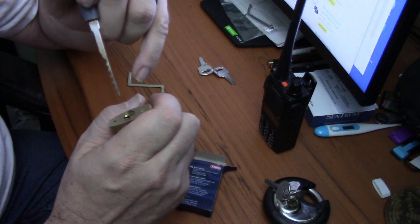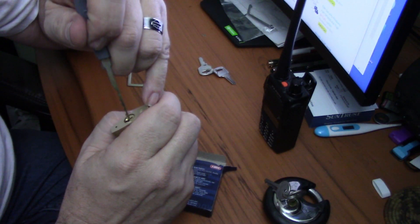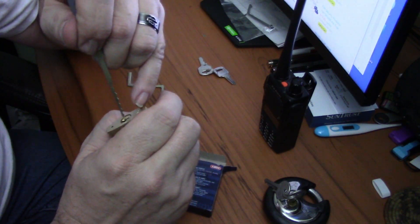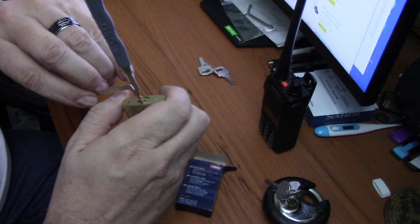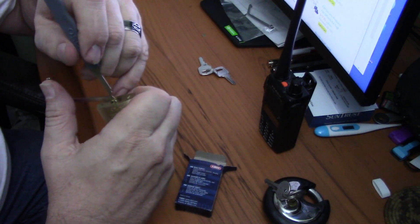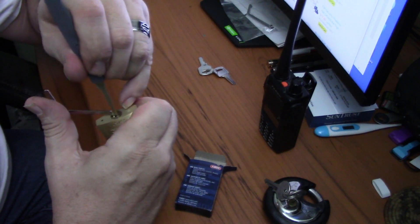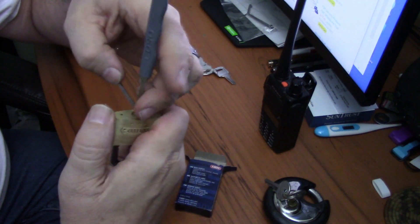This keyway is small. I'm going to put the pick in first, and then insert the tension bar at the bottom of the keyway and get to picking it. And there we go. Open.